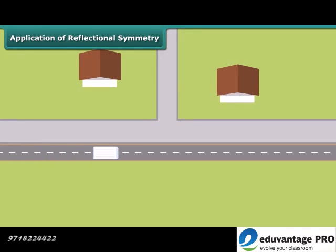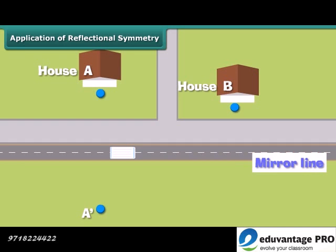Charm, a milkman, wants to park his van at some point on the street and distribute milk to houses A and B. Can you suggest him where should he park his van so that his walking distance from the street to the houses A and B will be least? Let us find out. We can use reflectional symmetry here. Let A' be the image of A in the mirror line which is the street here. Now join the points A' and B. You can see that at point P, the mirror line and A'-B meet. Thus, point P is the ideal place for Charm to park his van.